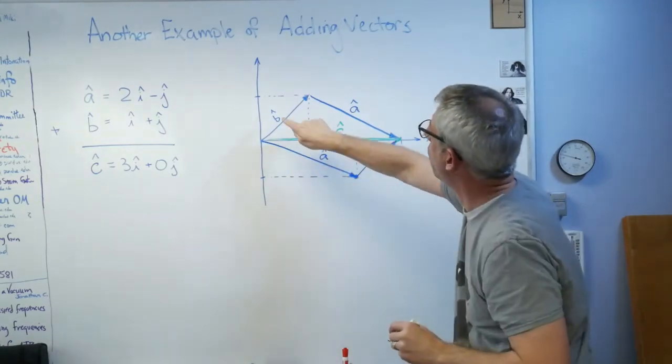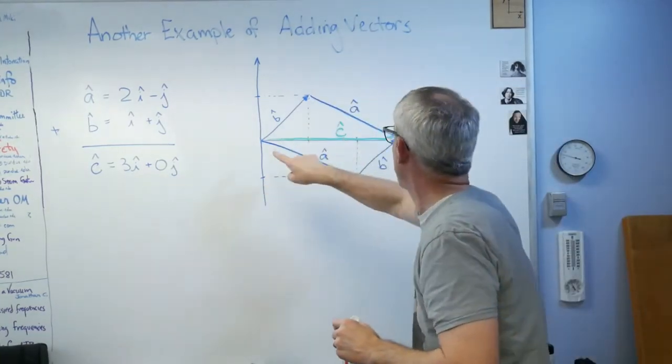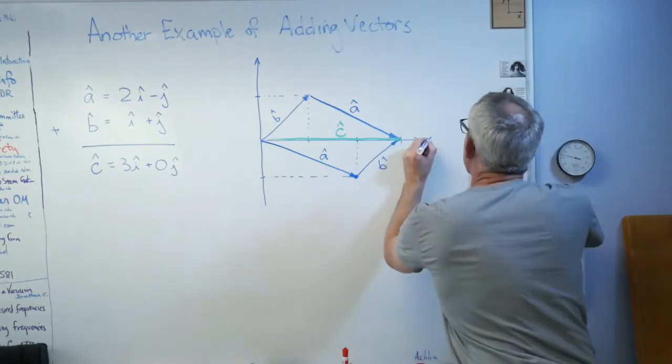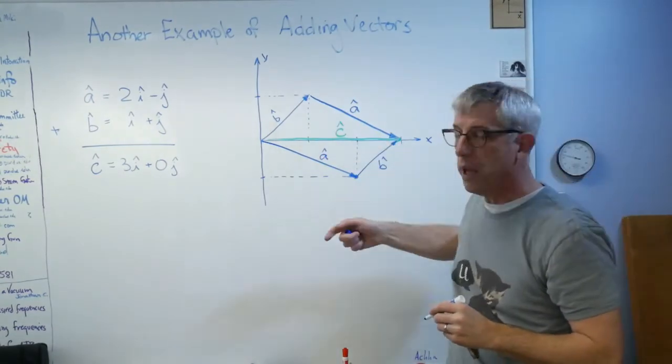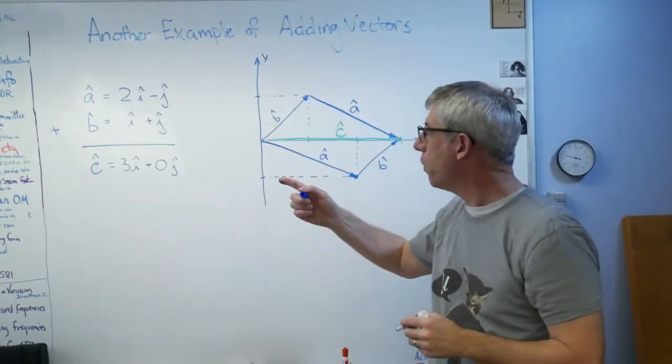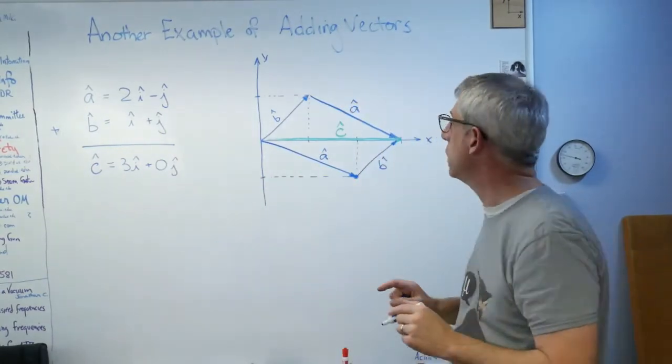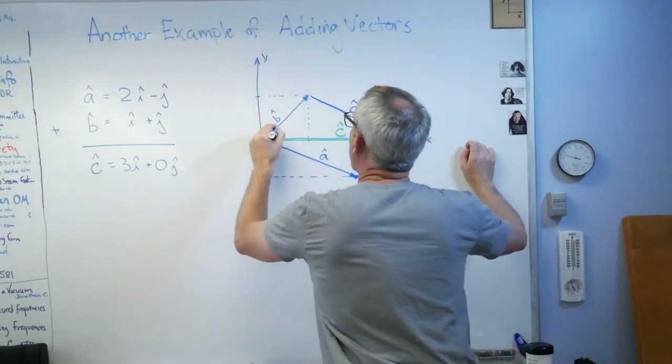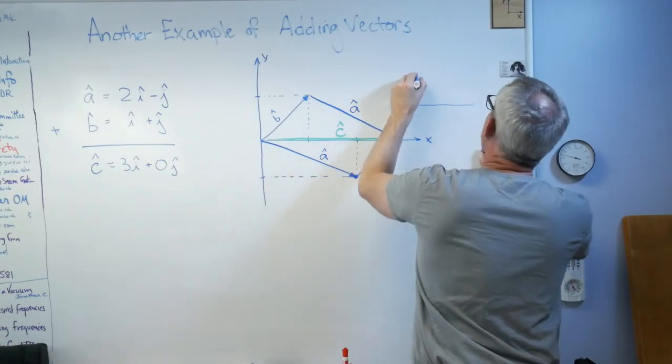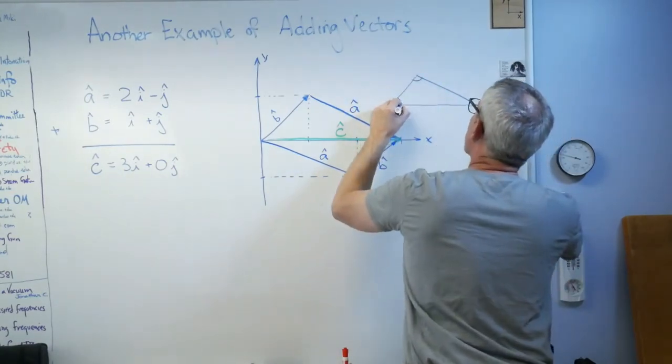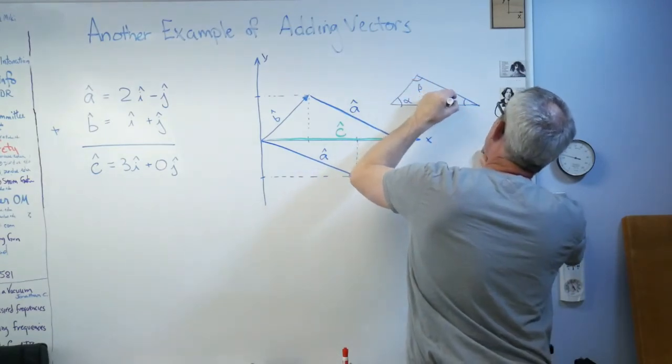Notice both form a path through space that gets me to that point, which is 3 over here along the x-axis and nothing in the y-axis. So that worked. Now if you don't want to do it this way and you prefer to do this in a trigonometric way, absolutely you can. You can use the law of cosines if you want.